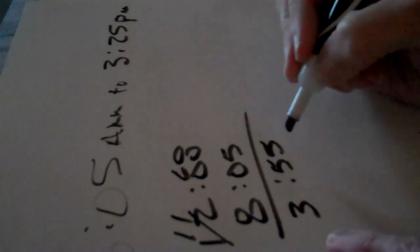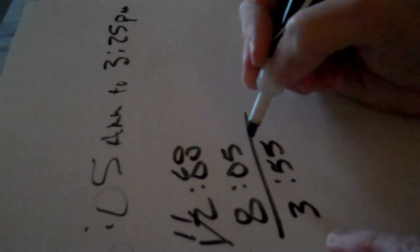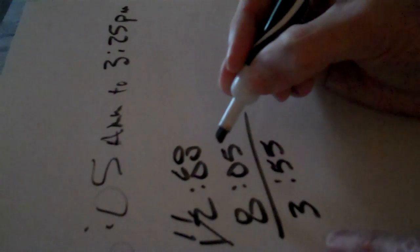And then 8 from 11, 8, 9, 10, 11. So I have 3. Okay, so it took 3 hours and 55 minutes to get from 8:05 AM to 12 o'clock PM.